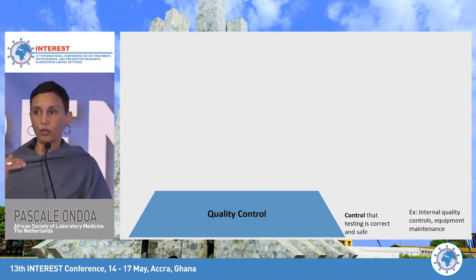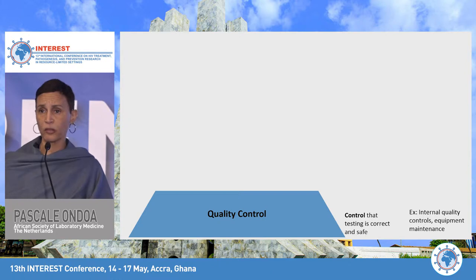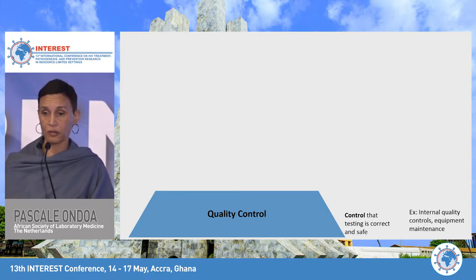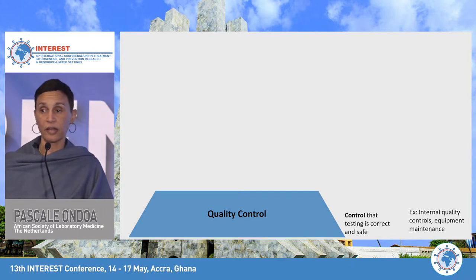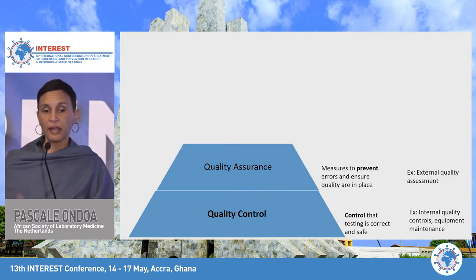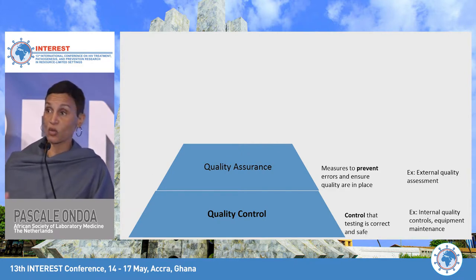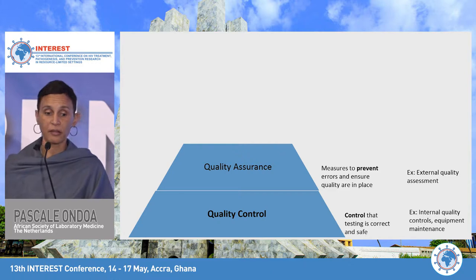If we try to show these different elements in a diagram, we start with the most simple activity: quality control. You make sure that the result of the test is correct — for example, you incorporate internal quality control positive and negative samples, and you make sure your equipment is well maintained. Then it becomes more complicated: quality assurance ensures all measures are in place.